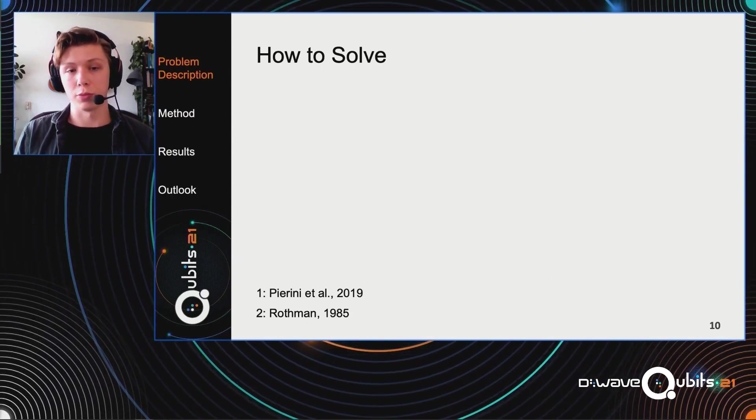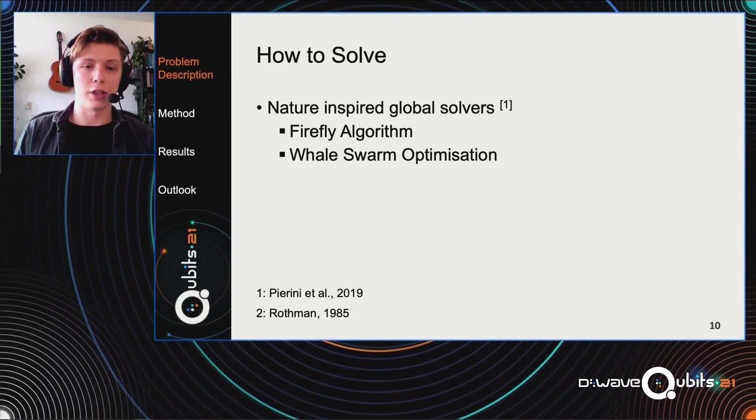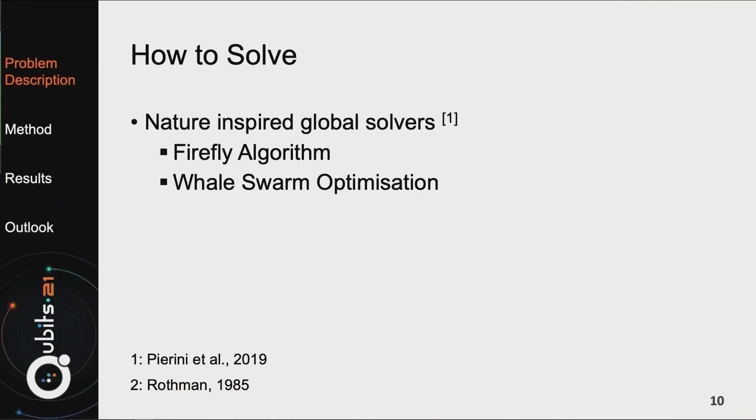Nonetheless, because it's a very important problem, people have tried to solve it. Right now, the state of the art solvers are nature inspired global solvers, like the Firefly algorithm or the Whale Swarm optimization. In the past, simulated annealing has been used to solve this problem. The downside, however, is that these are very expensive methods, and they don't find the global optimum all the time. It's very important that we find it and not some other local optimum that's very far away in solution space. To try to overcome these problems, we are looking into quantum annealing right now.